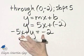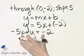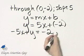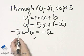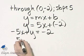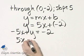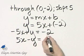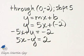You may see it written like this. You may also see it written in another format. Let's multiply through by negative 1. This times negative 1 is 5x, this times negative 1 is minus y, and this times negative 1 equals 2.